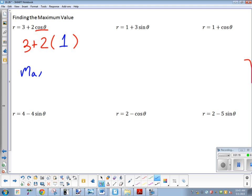You're going to have a maximum value then when I plug in one. How big is that number going to be? Five. Three plus two times one, which gets you five. That's my max. That's as big as it gets.